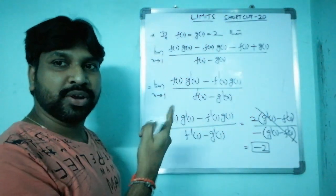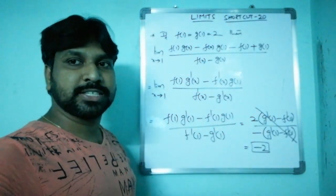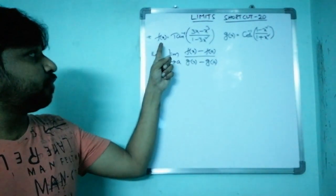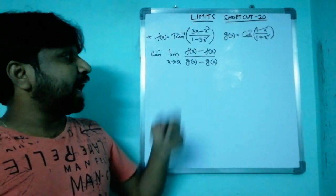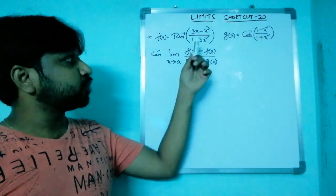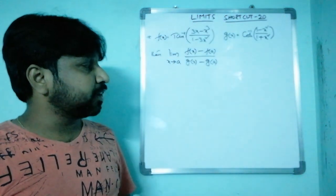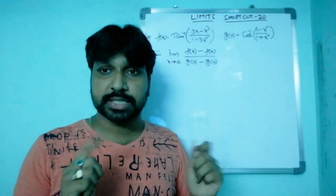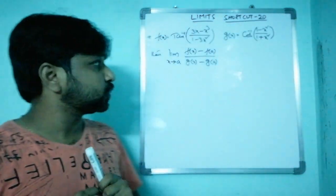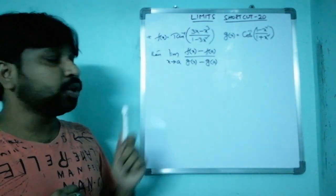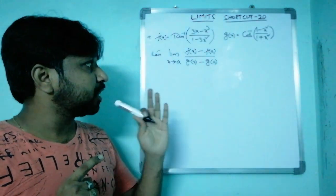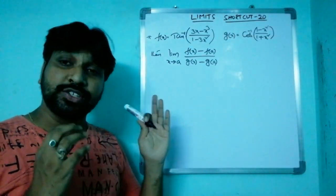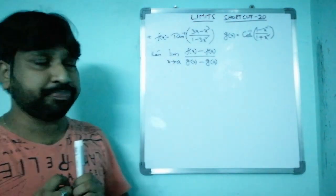Coming to the next question: f(x) = tan⁻¹[(3x - x³) / (1 - 3x²)] and g(x) = cos⁻¹[(1 - x²) / (1 + x²)]. Find the limit as x tends to a of [f(x) - f(a)] / [g(x) - g(a)].